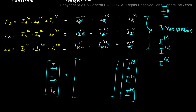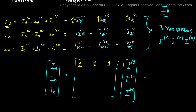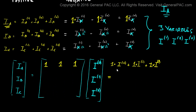Now we have to fill in all the other stuff. For Ia, we know that Ia equals the positive sequence plus the negative sequence plus the zero sequence. If we just multiply everything by one, we can represent this in the matrix. So we have: one for zero sequence, one for positive sequence, and one for negative sequence. Ia equals one times zero sequence component plus one times positive sequence component plus one times negative sequence component. We've taken care of this row.